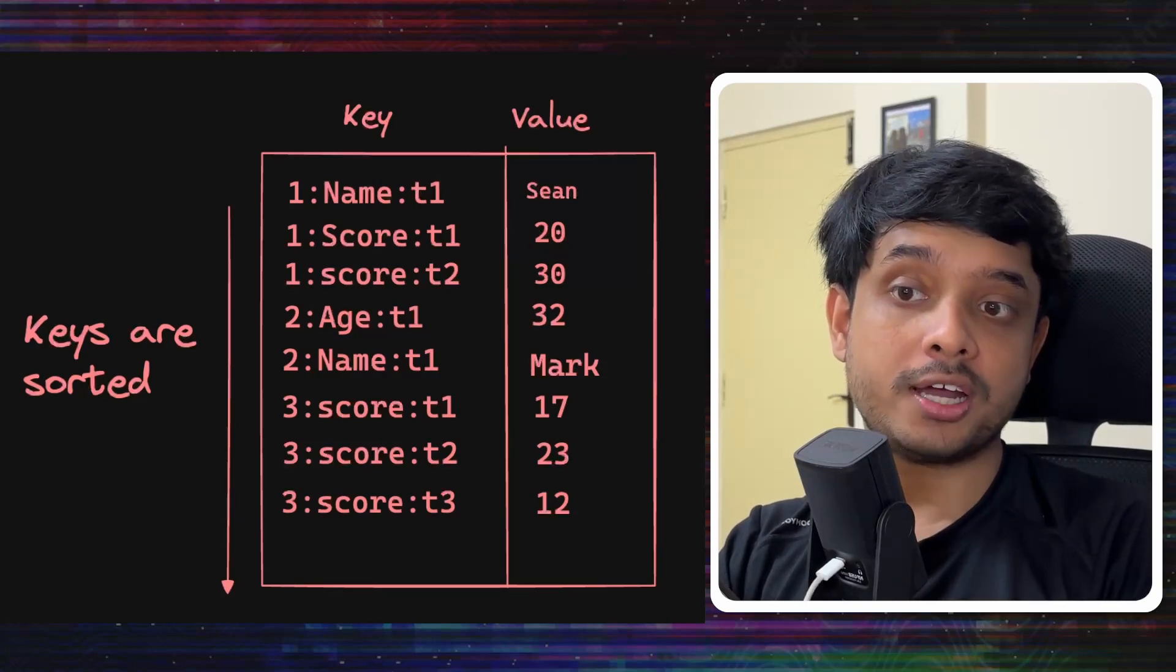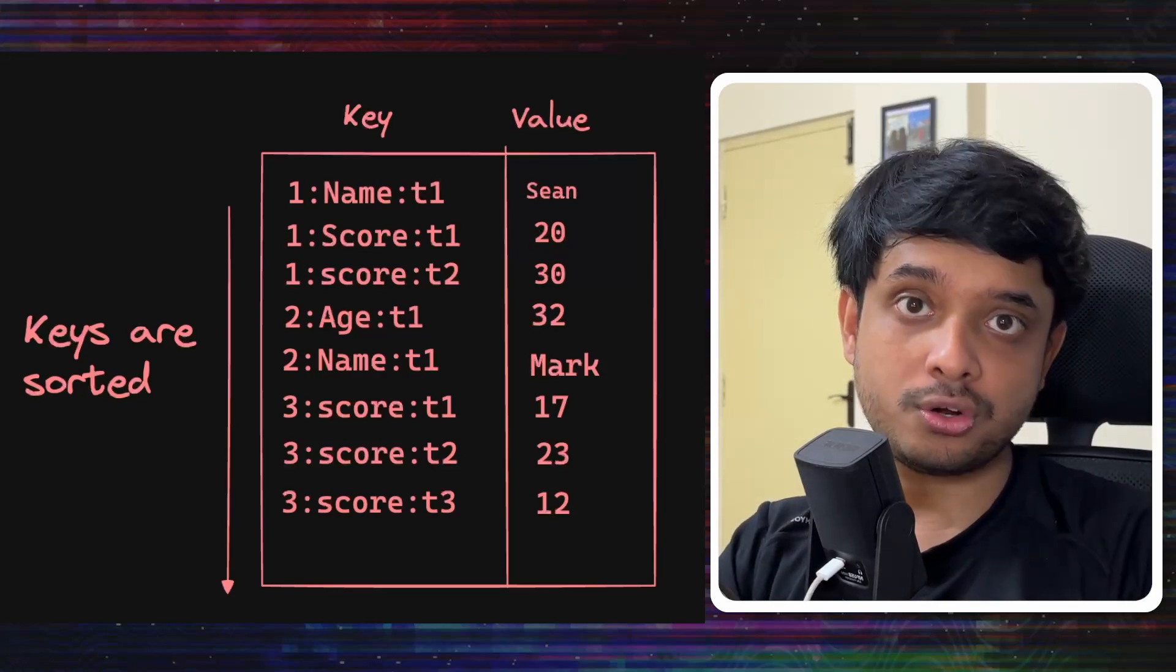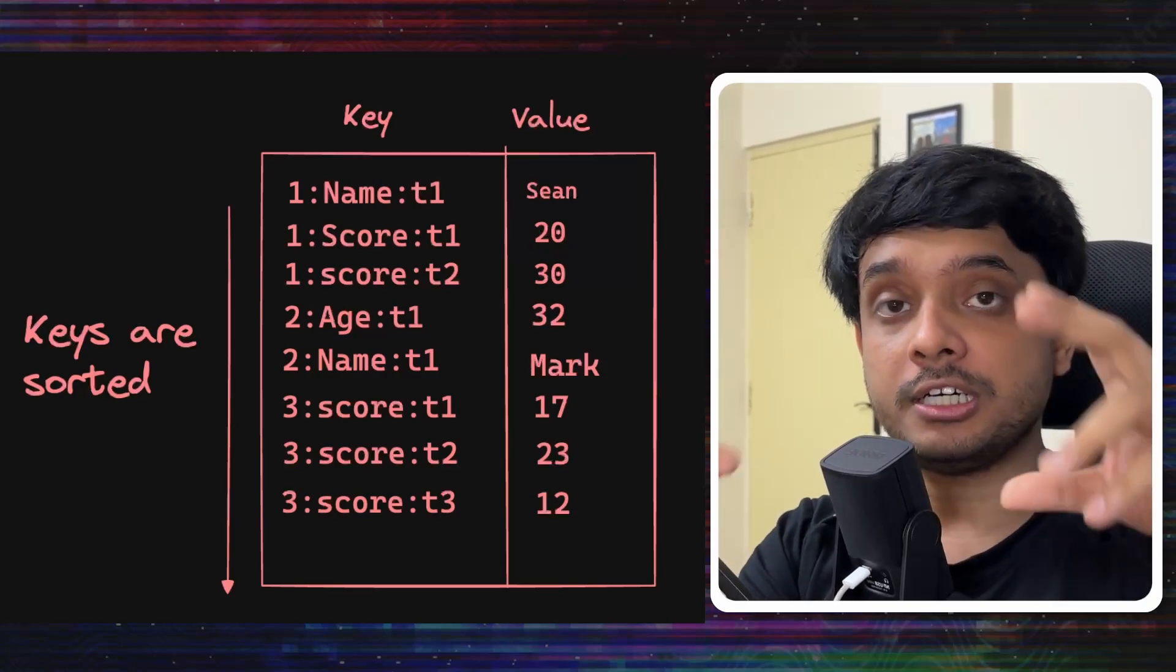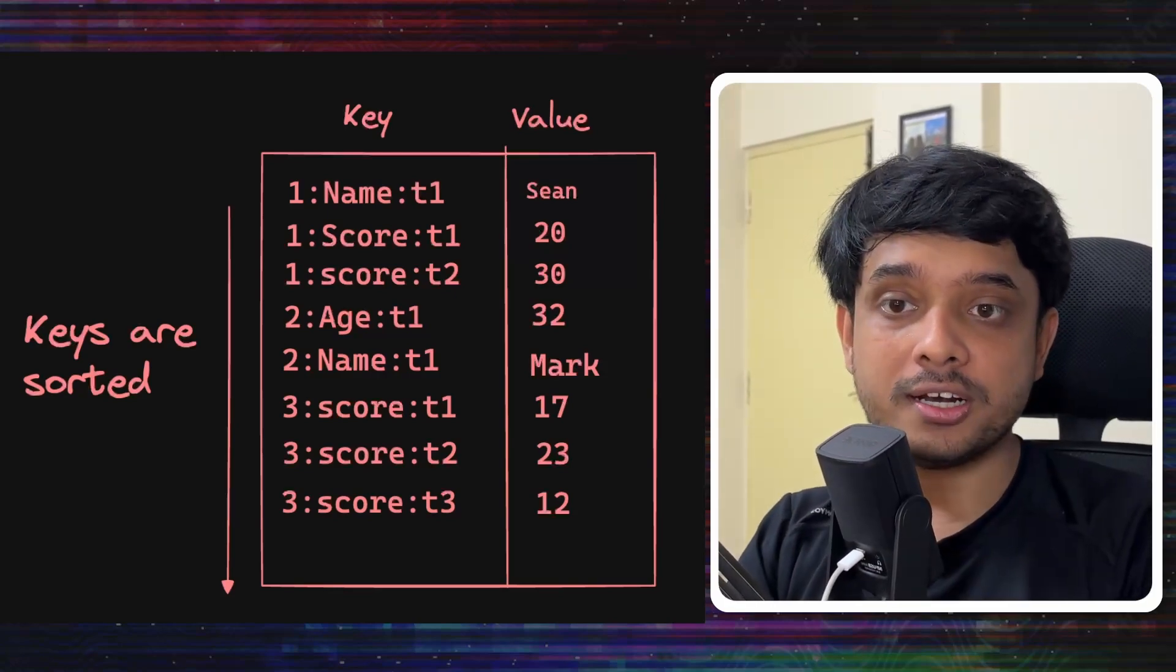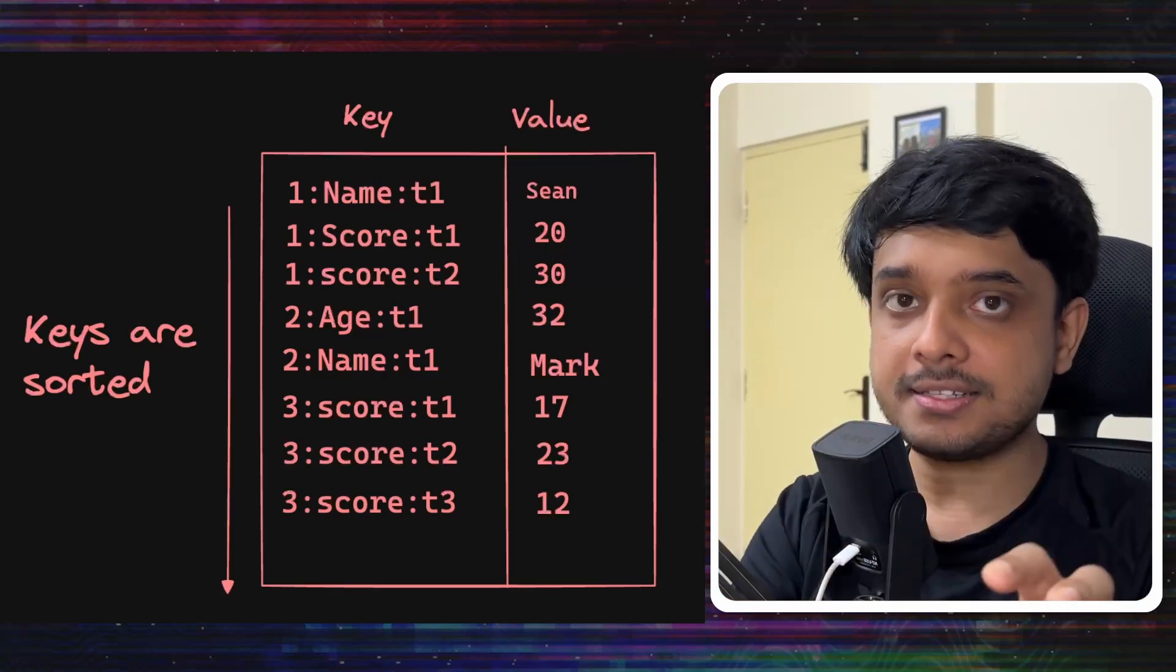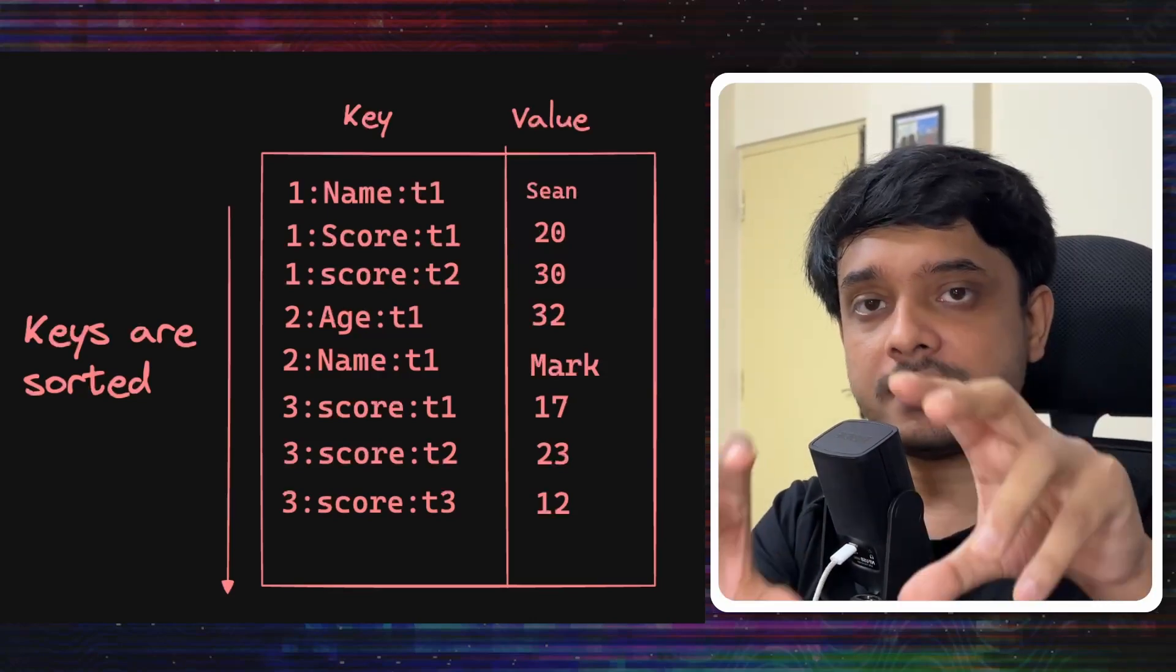This is actually very beneficial for us since the data for each row and the data for each column would be sequential. It will be one after the other, it will be together since all the data is sorted. So we can access the data of each row and access the data of each column together very easily.